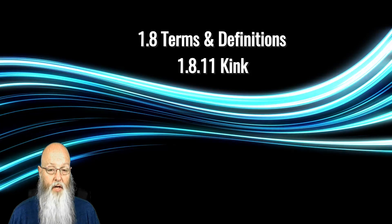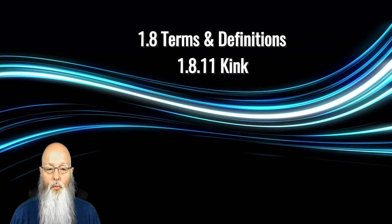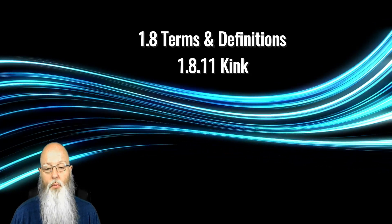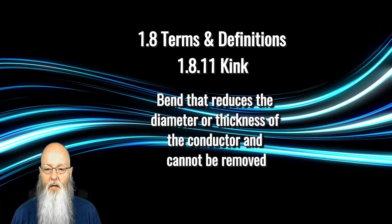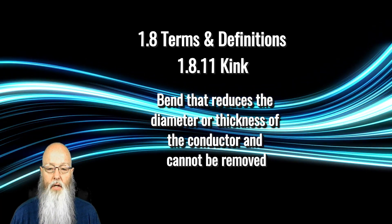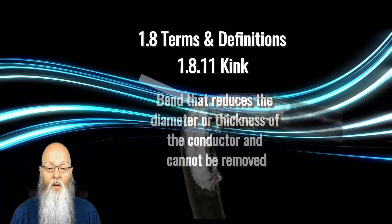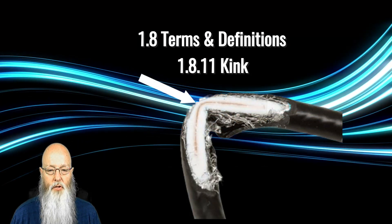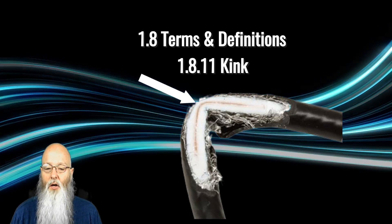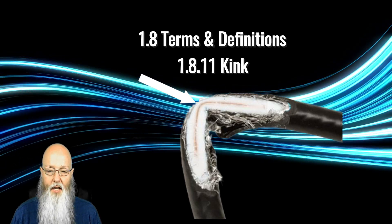1.8.11 adds the term kink. Most users of the document who speak English as their primary language would be familiar with this word, meaning a tight or abrupt bend in a wire or component lead that visibly reduces the diameter or thickness of the conductor and cannot be removed by straightening. When the 610 and other documents are translated, words like kink do not always translate well. By adding the definition, the committee is helping users understand a bit of American English slang.